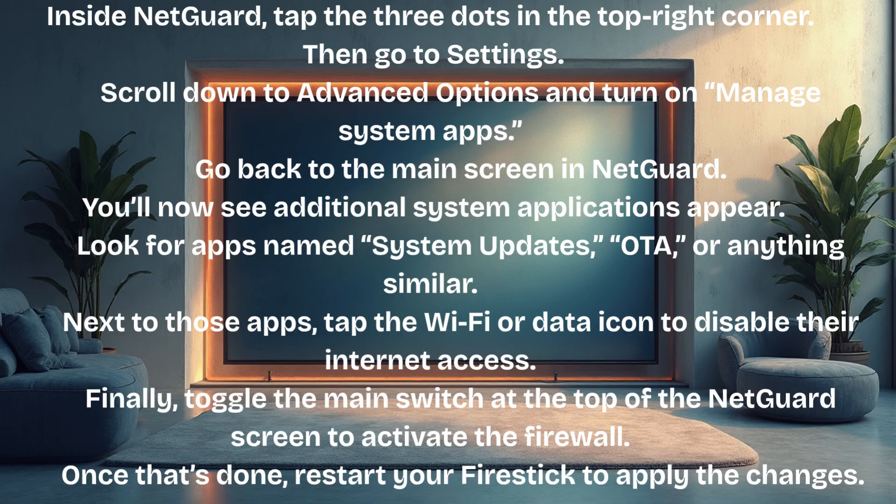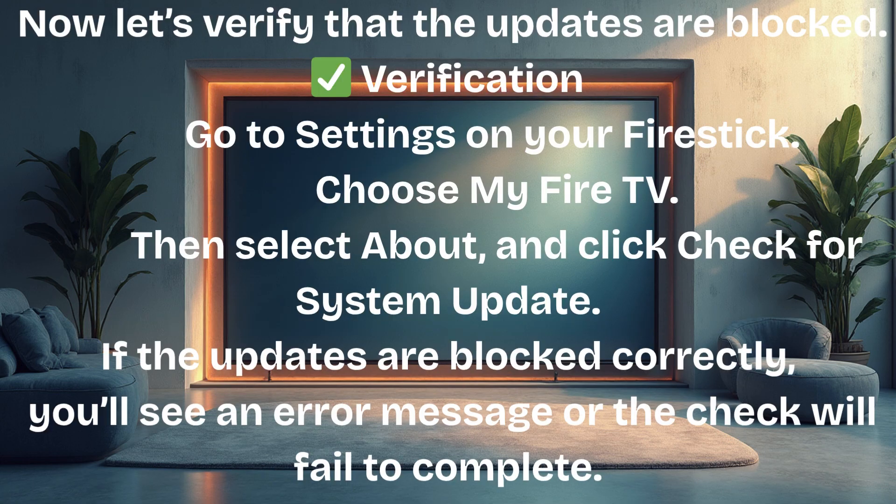Finally, toggle the main switch at the top of the NetGuard screen to activate the firewall. Once that's done, restart your Fire Stick to apply the changes. Now let's verify that the updates are blocked. Go to Settings on your Fire Stick, choose My Fire TV, then select About and click Check for System Update. If the updates are blocked correctly, you'll see an error message or the check will fail to complete.